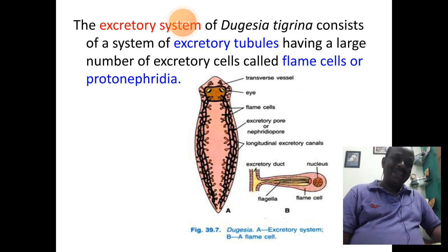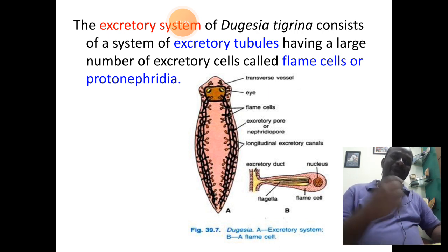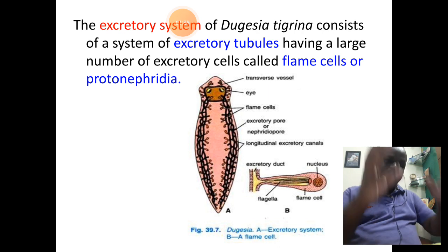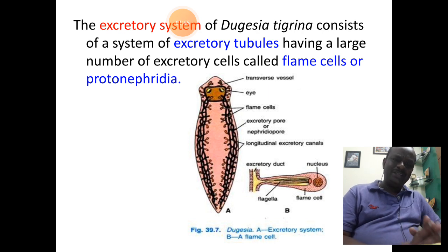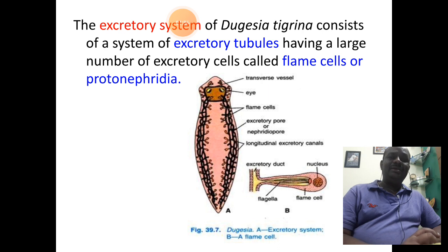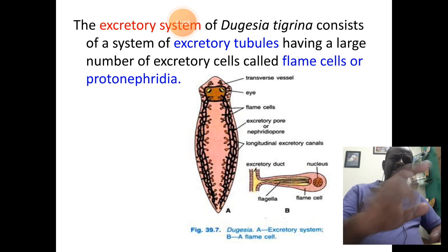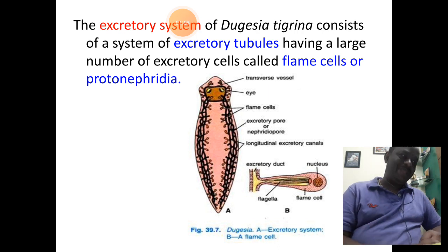In the picture you can see two important parts: number one, excretory tubules — tube-like structures seen towards the lateral side of planaria — and towards the right side of the slide, one unit of a flame cell is seen. These are the two major parts of the excretory system in case of planaria.